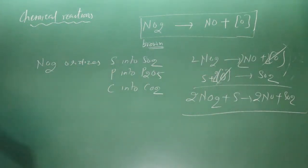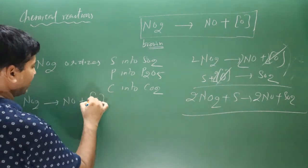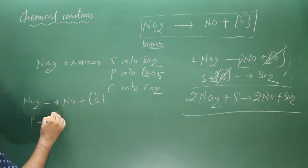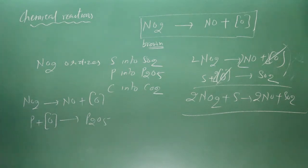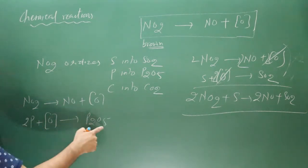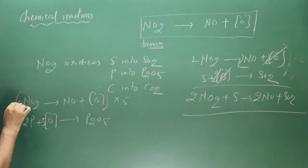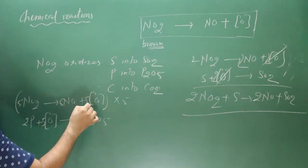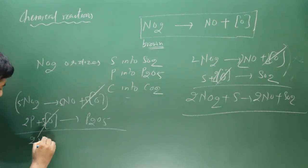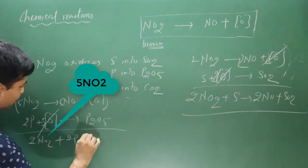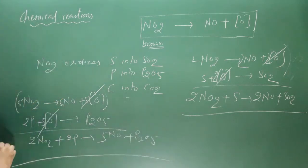For phosphorus: NO2 releases nascent oxygen, which oxidizes phosphorus to its highest oxidation state (+5) giving P2O5. Balancing: 2 phosphorus and 5 nascent oxygen — multiply the first equation by 5 to get 5NO2 + 5[O], then add: 5NO2 + 2P → 5NO + P2O5.